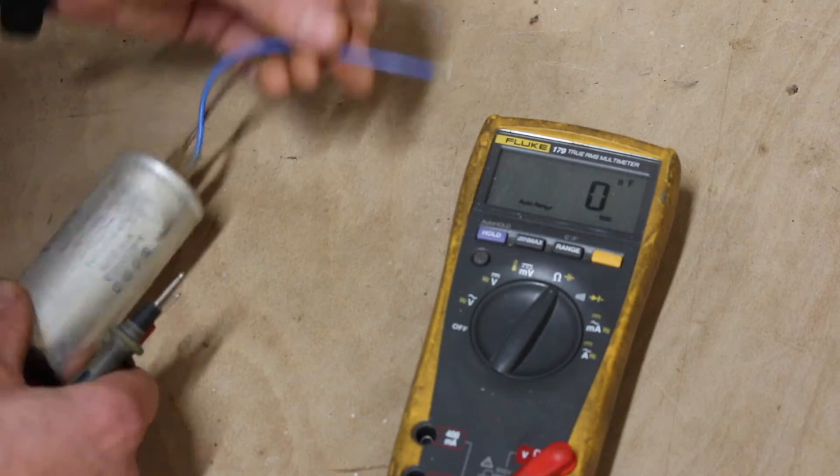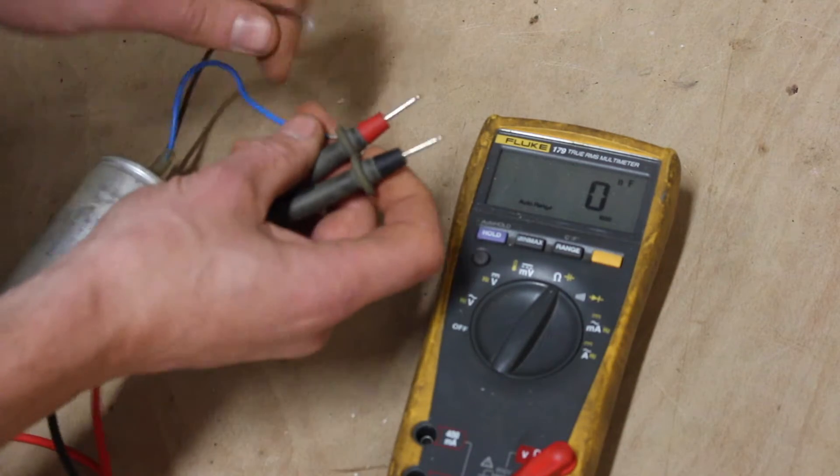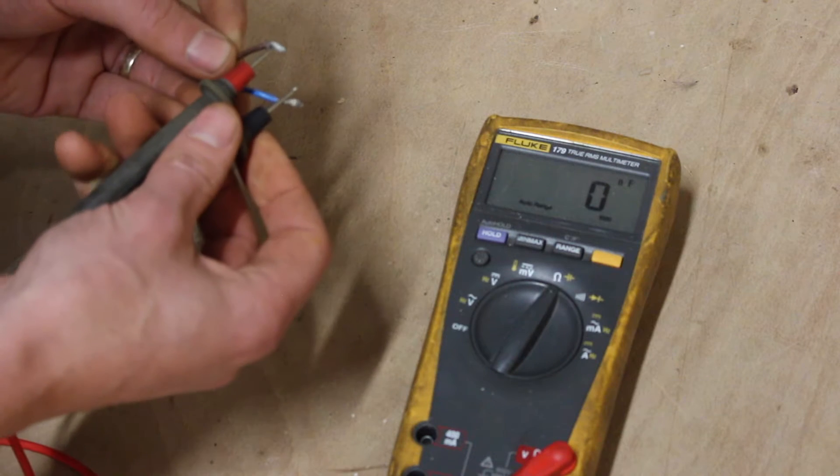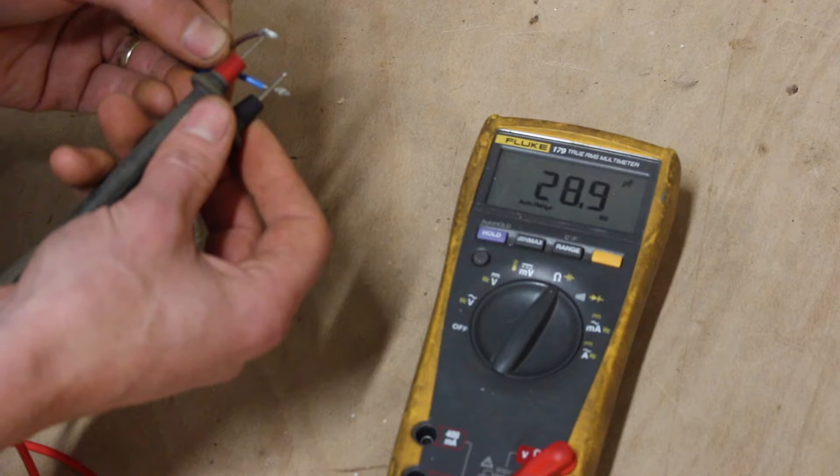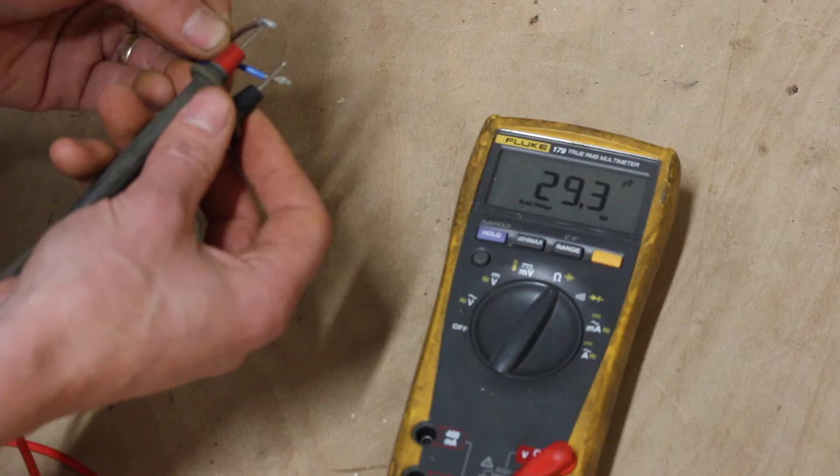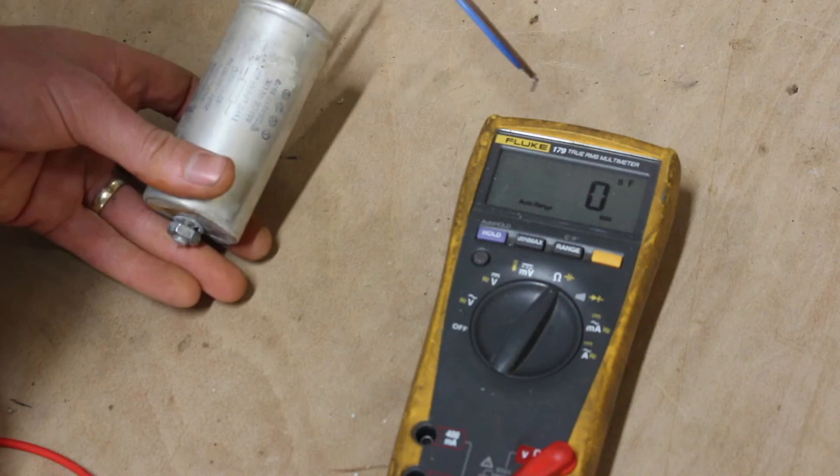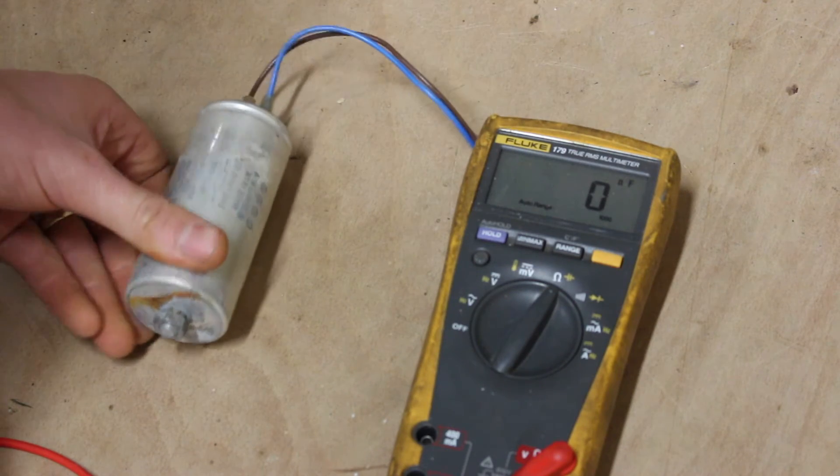Here's another older one, also 30 microfarads. If we test it between the leads, we're getting 29.3. That's within our plus or minus 10% spec, so that should be perfectly good.